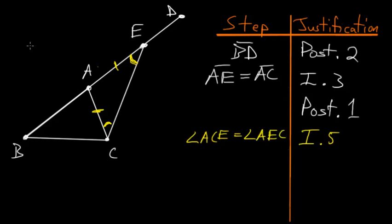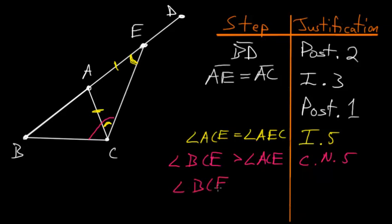And notice that this angle ACE is just a part of this bigger angle here, BCE. And we know due to common notion number five, that the whole is always greater than the part. So we can write down that the angle BCE is bigger than the angle ACE. And since ACE is equal to AEC, we know that the angle BCE is bigger than the angle AEC.